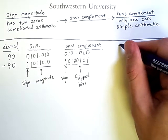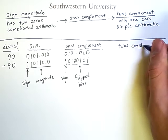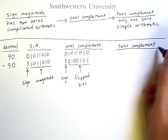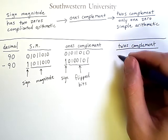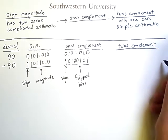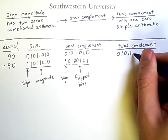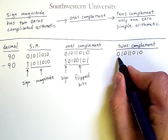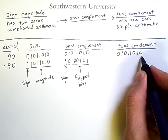To get to two's complement, we do one more step. At least in the case of the negative number we do. The positive number is, once again, the same. Positive 90 in two's complement representation is simply 0, 1, 0, 1, 1, 0, 1, 0. Once again, this 0 here represents a positive sign. And these bits indicate that the value is 90.